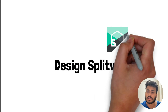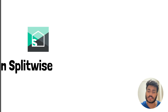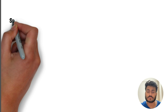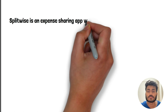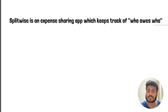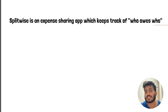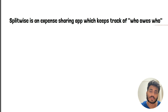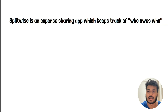In today's video we'll look at how we can design Splitwise. Splitwise is an expense sharing app which keeps track of who owes who. If you have paid on somebody else's behalf, you can go and add that expense on their name such that they can see and pay you back.